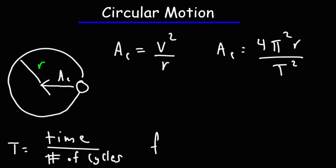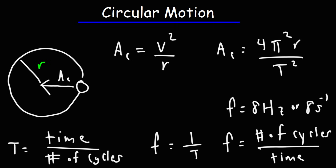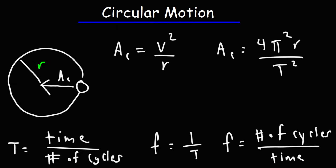The frequency is the reciprocal of the period. So the frequency is the number of cycles divided by the time. If the ball travels around the circle 8 times in 1 second, the frequency will be 8 hertz or 8 seconds to the minus 1. The frequency is how many cycles it can make in 1 second; the period is how long it takes to complete one cycle.